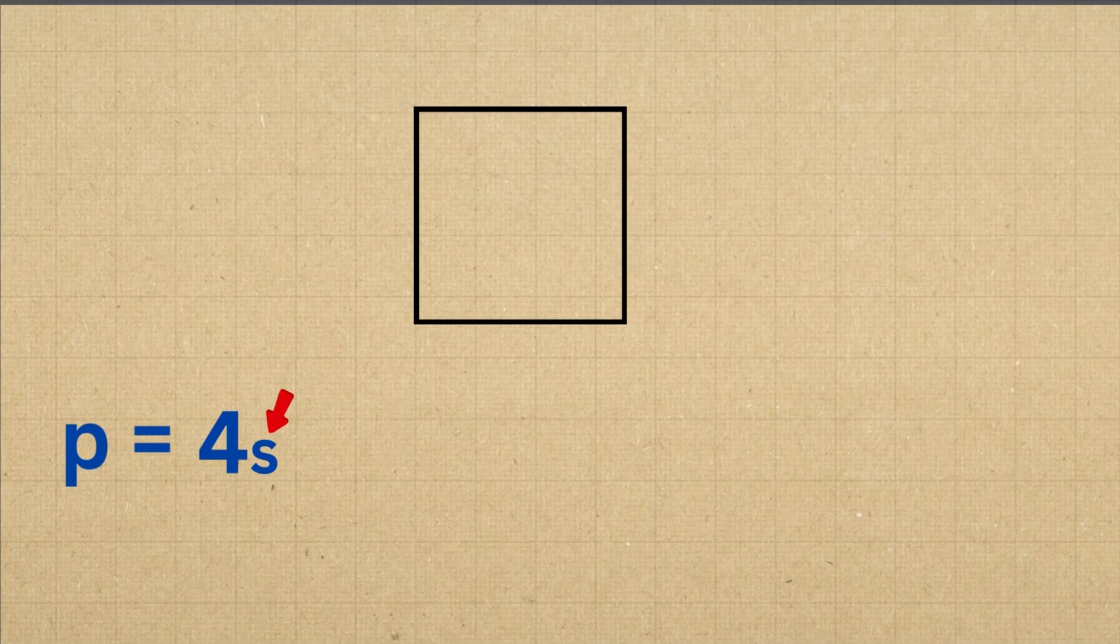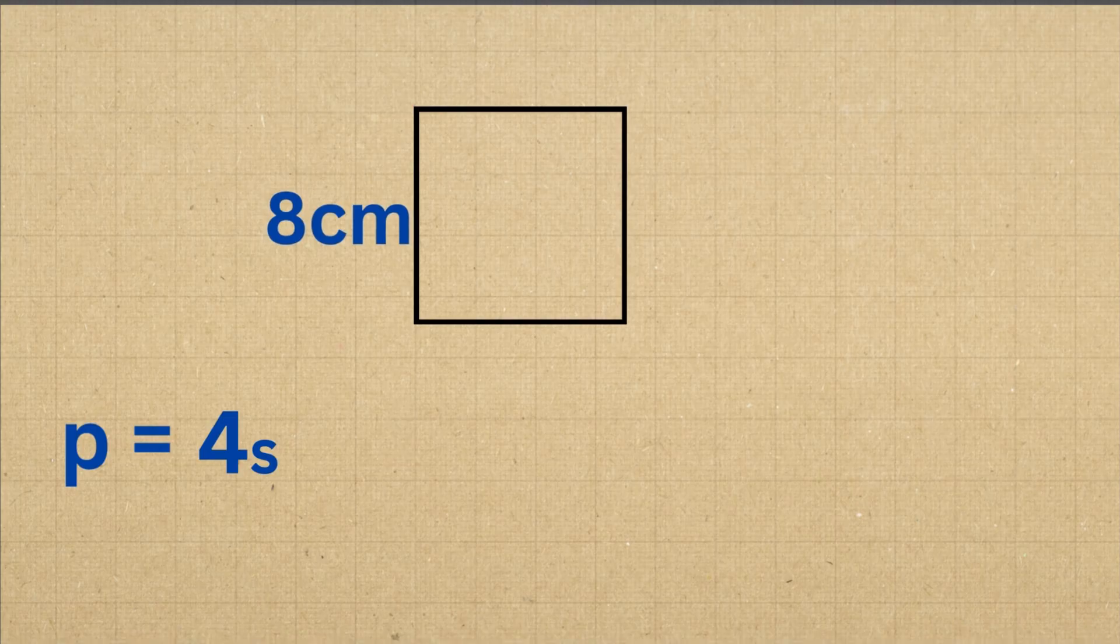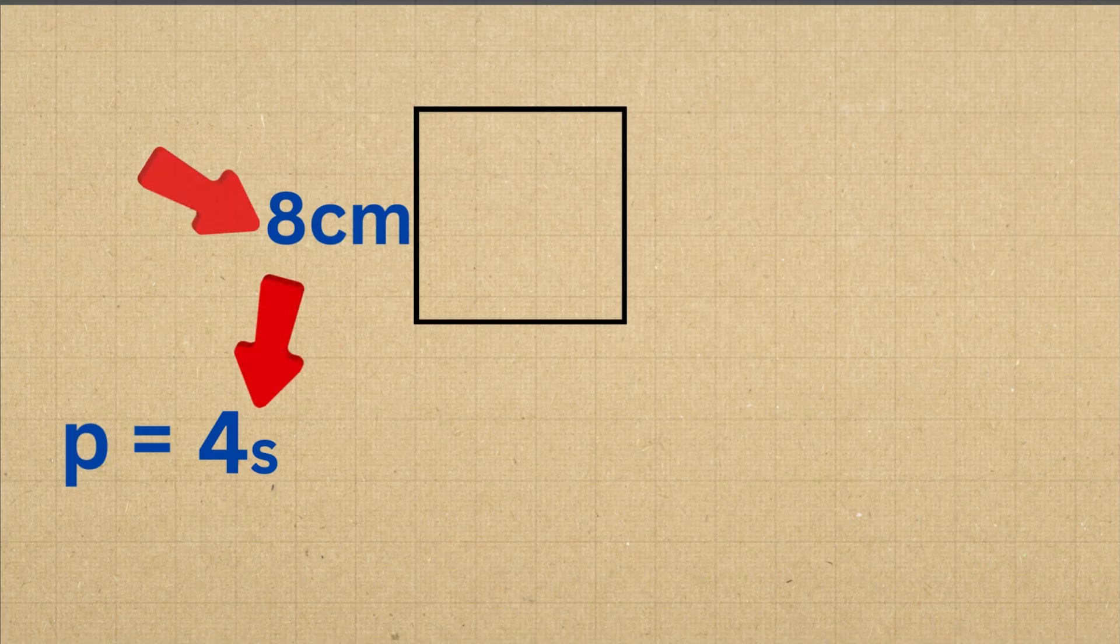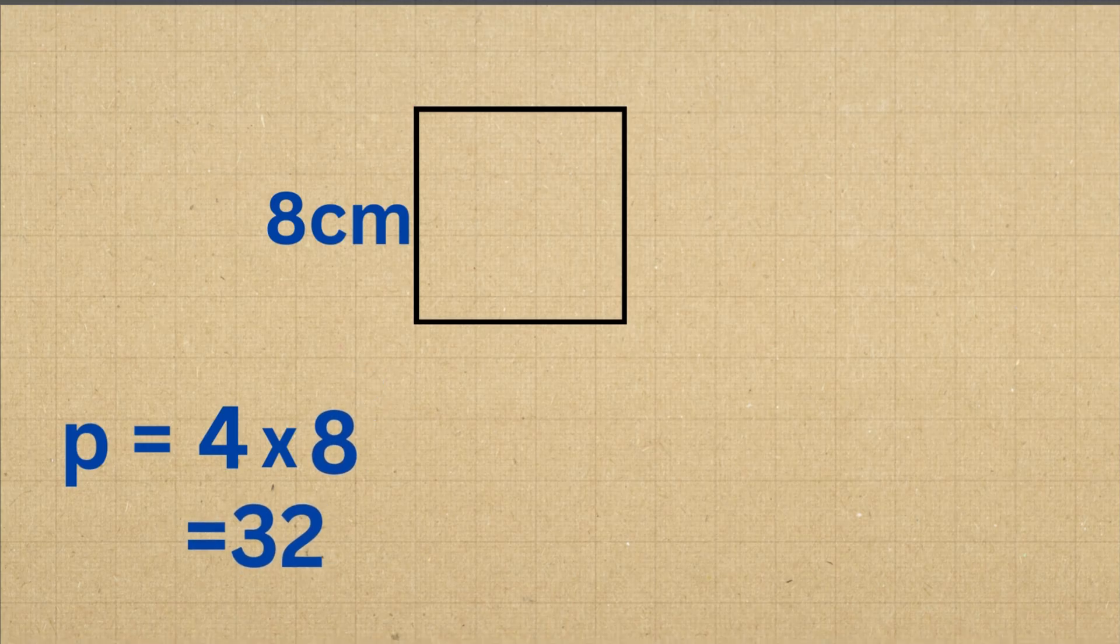For example, if a square has a side length of 8 cm, we can apply our formula to make the calculation easier. To find the perimeter, we multiply the side length by 4. That means 4 times 8 equals 32. So the total perimeter of the square is 32 cm.